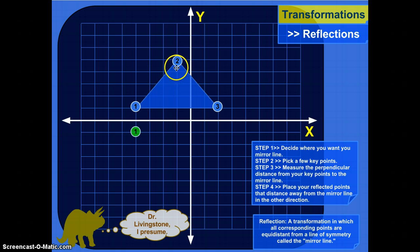Let's do point two. Point two is one, two, three, four, five units away from the mirror line. So I want to move its corresponding point one, two, three, four, five points down.